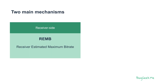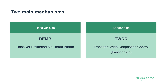In WebRTC, there are two mechanisms for bandwidth estimation. The first one is receiver side — this is called REMB, Receiver Estimated Maximum Bitrate. And then there's a sender side one. In WebRTC, that's TWCC — Transport Wide Congestion Control, or Transport CC.